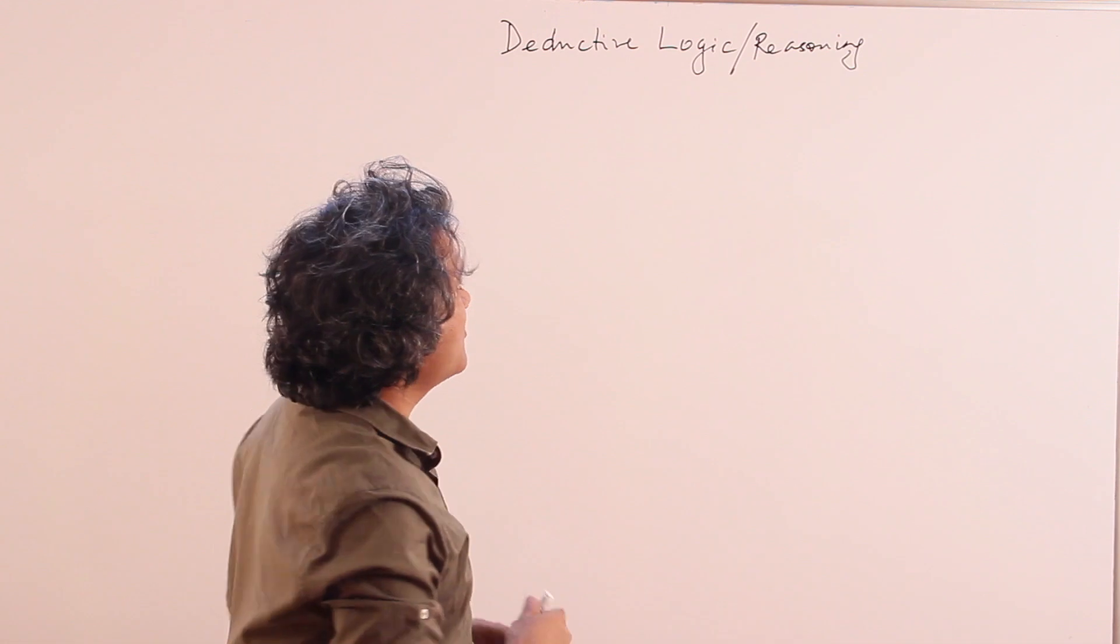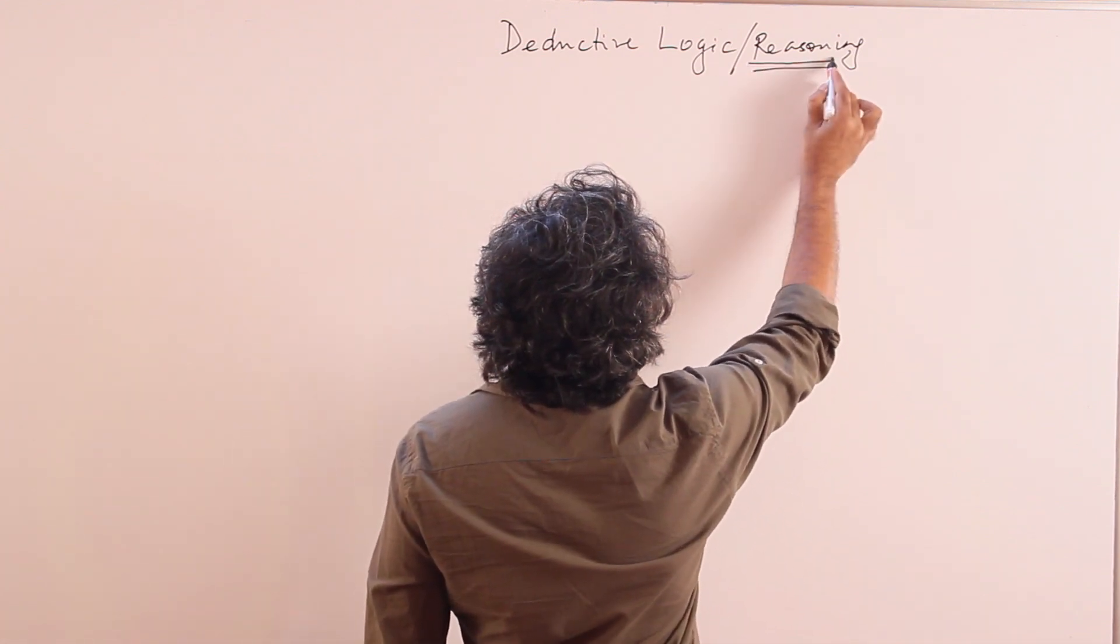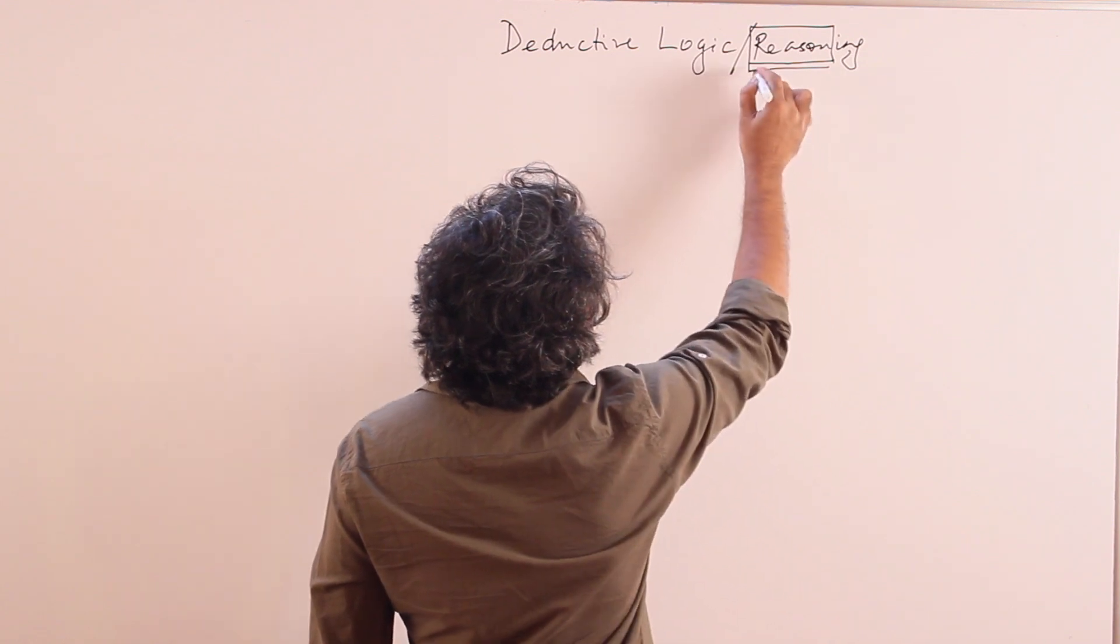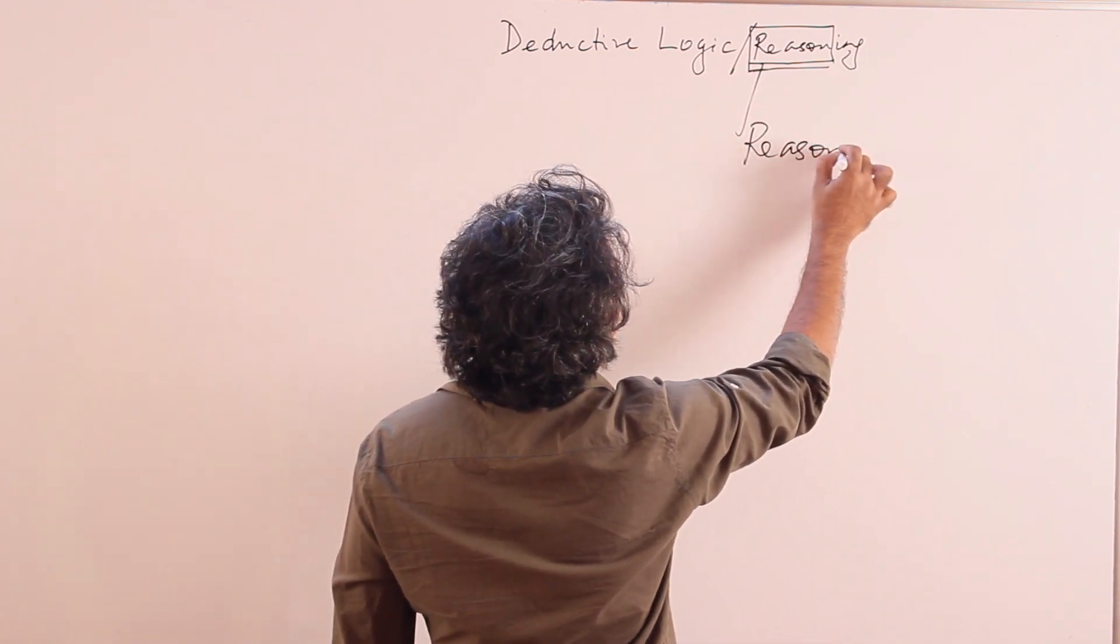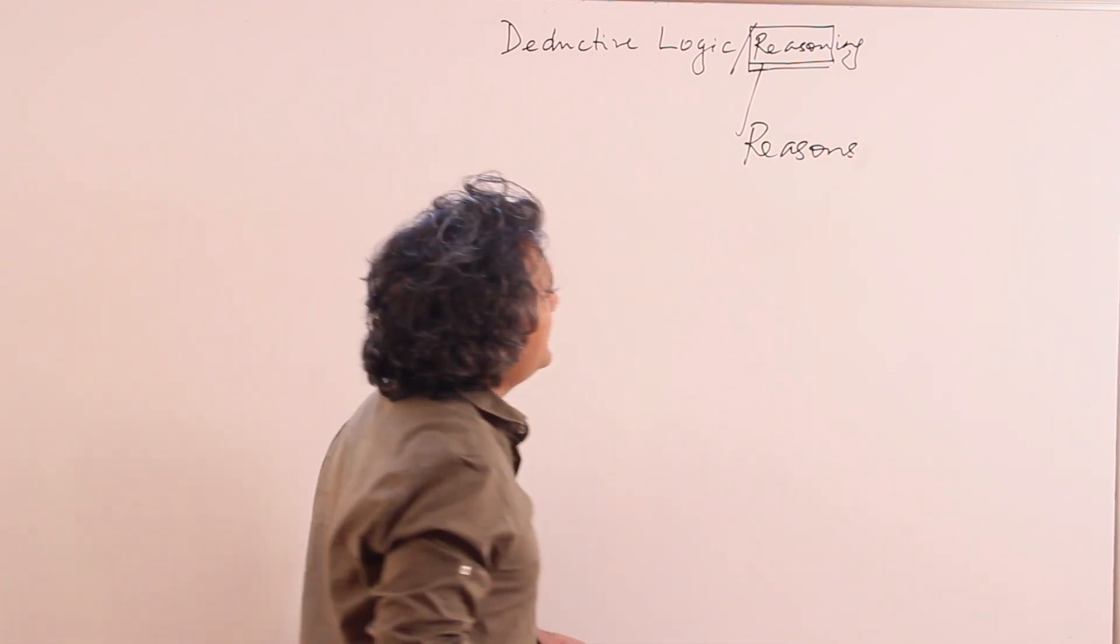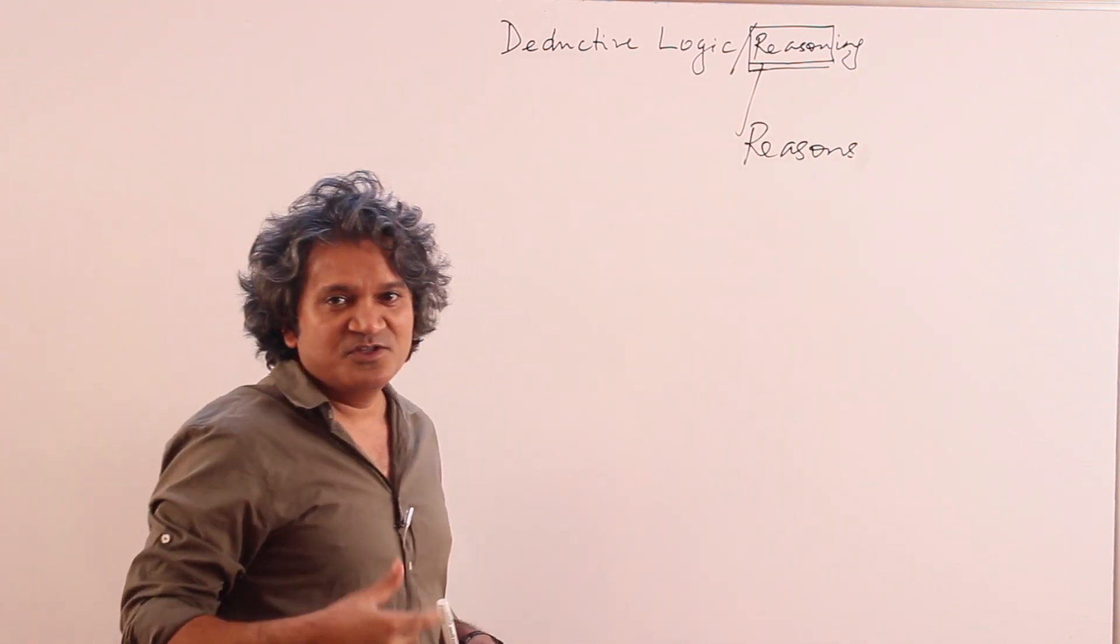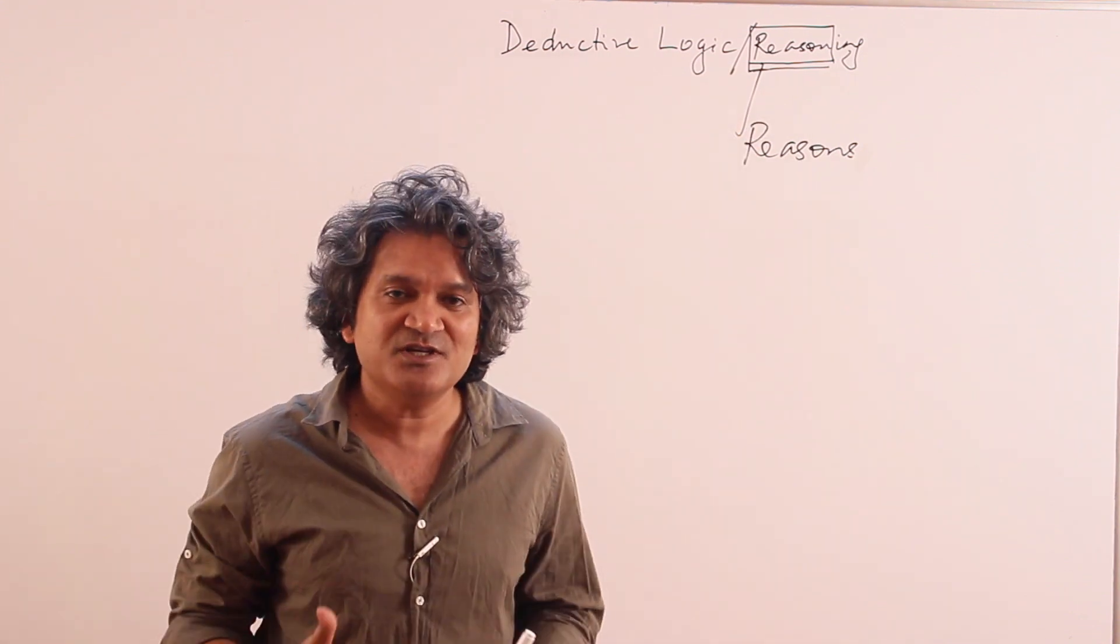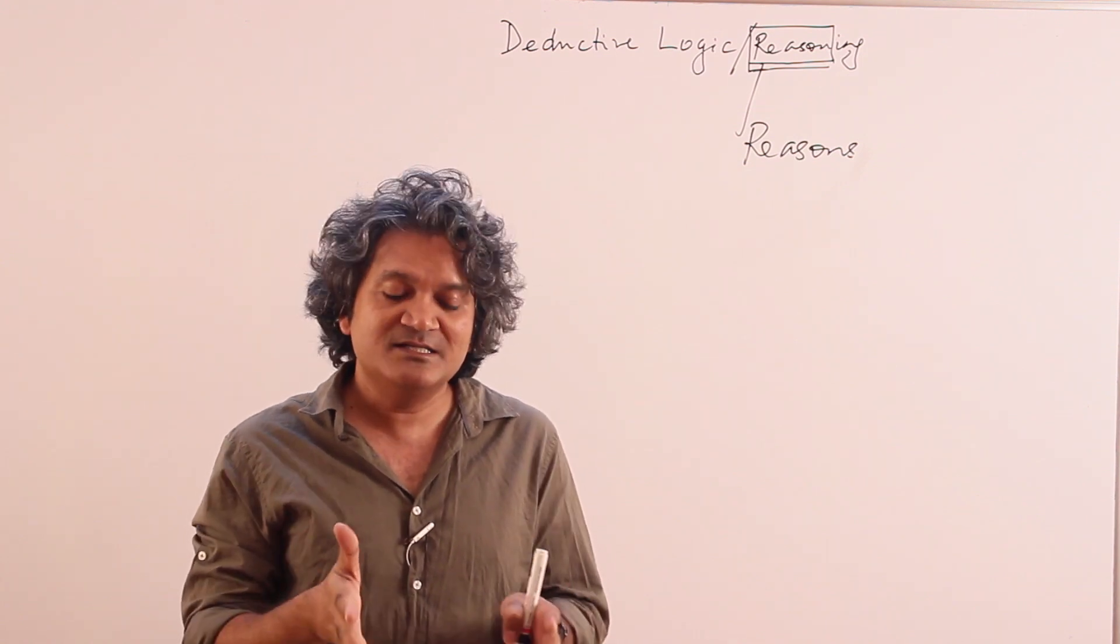First let's discuss what is logic or reasoning. The clue is this word - it comes from reason. Reasoning or logic have to do with reasons. So whenever we are trying to be logical, whenever we are trying to use logic in whichever situation possible, we are trying to come up with reasons.